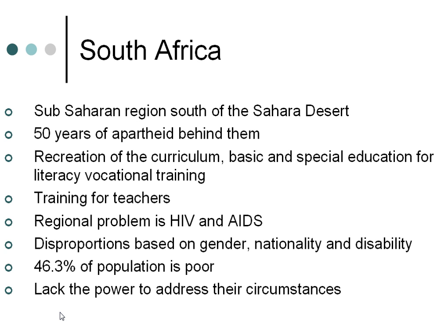South Africa has the highest proportion of poor people, of which 46.3% of the population is affected. Not only is there a lack of material wealth, they also lack the power to address their circumstances. The challenges and debates include the recreation of administration executives, changing the curriculum, attention to early child care, adult basic and special education, along with training for teachers for literacy and vocational education.